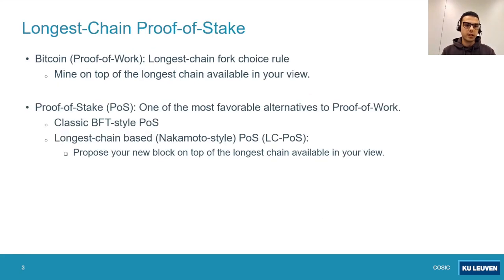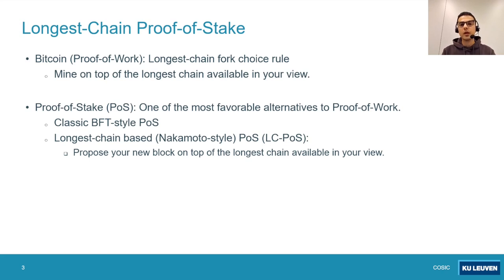Selfish mining is a well-studied attack in the context of Bitcoin, which is a proof-of-work based blockchain. The underlying fork choice rule of Bitcoin is called the longest chain — a pretty simple rule, but it works quite well. According to this rule, all miners should mine on top of the longest chain available in their view. While proof of work was a big revolution in the field of consensus, it faces limitations such as low throughput and high energy consumption.